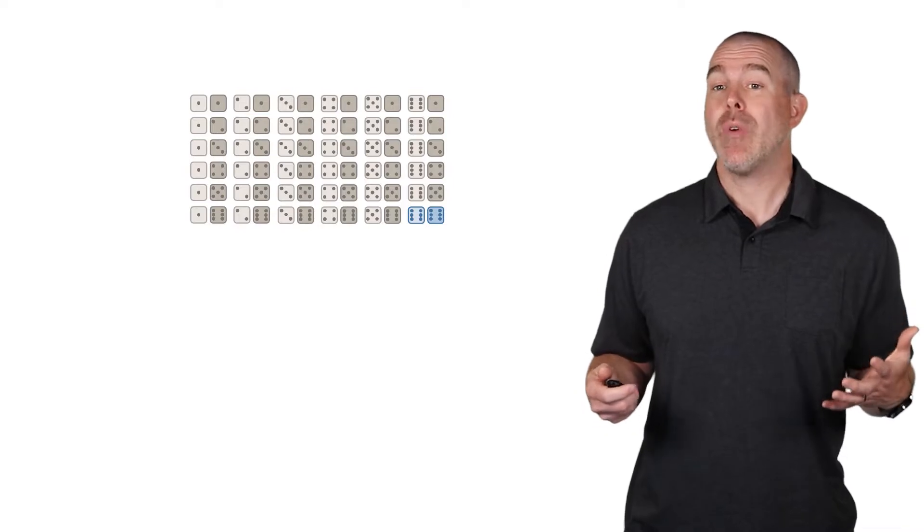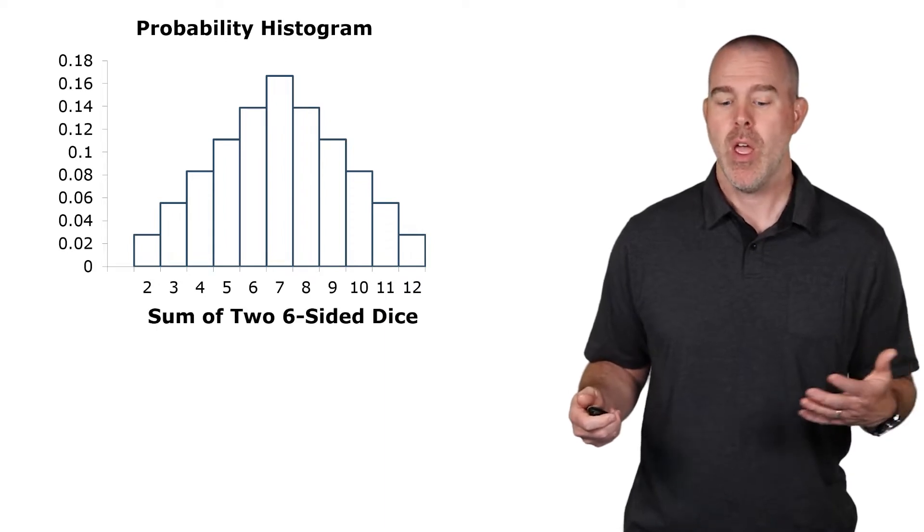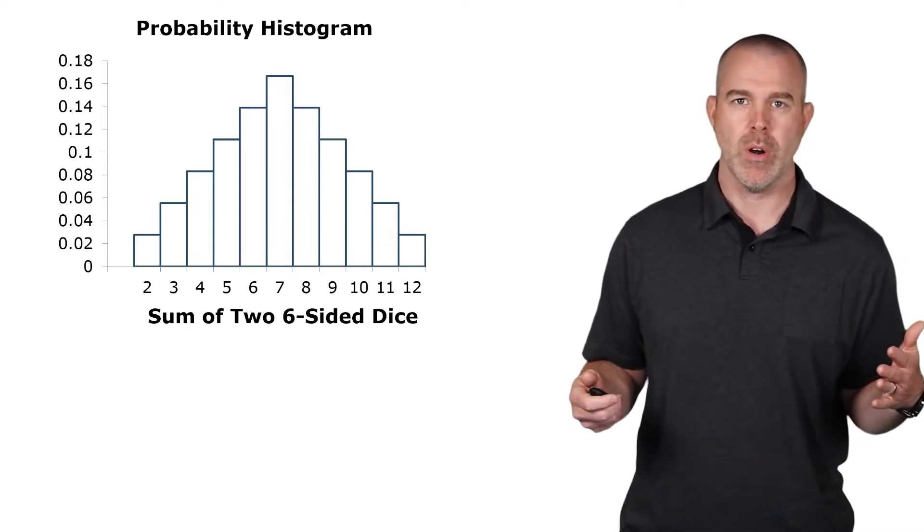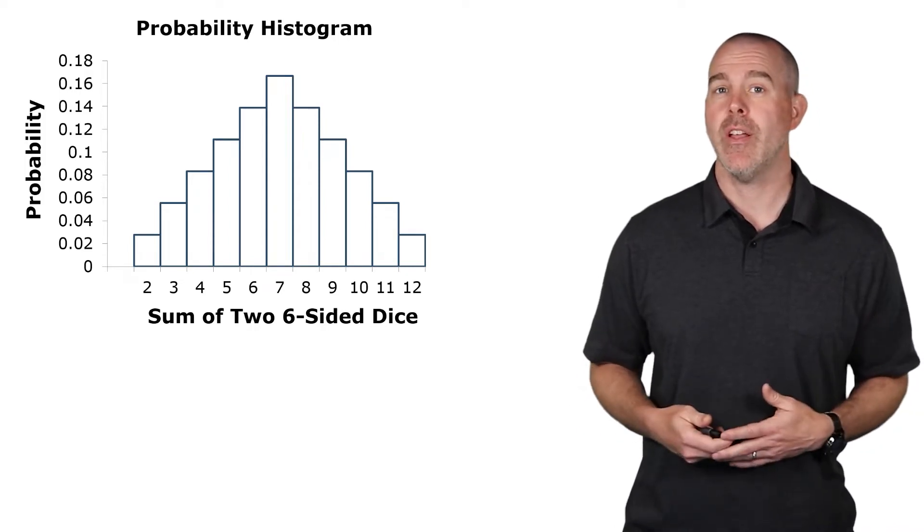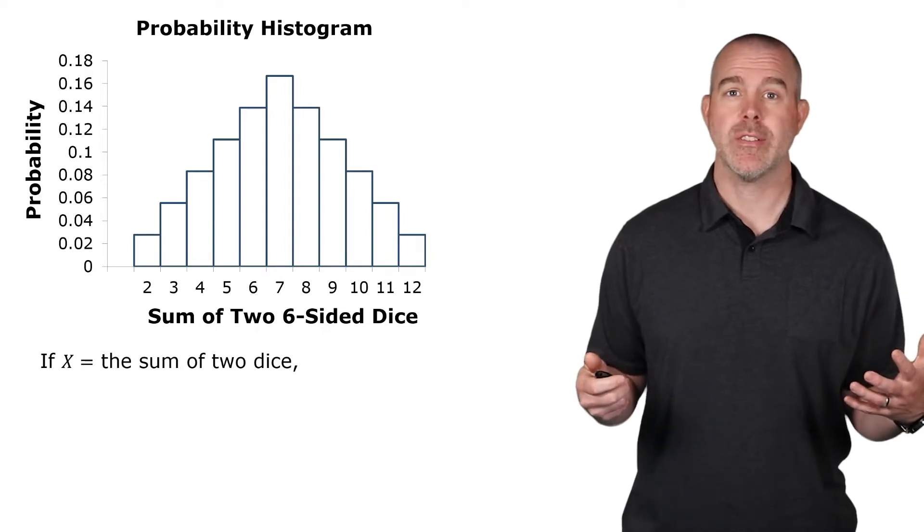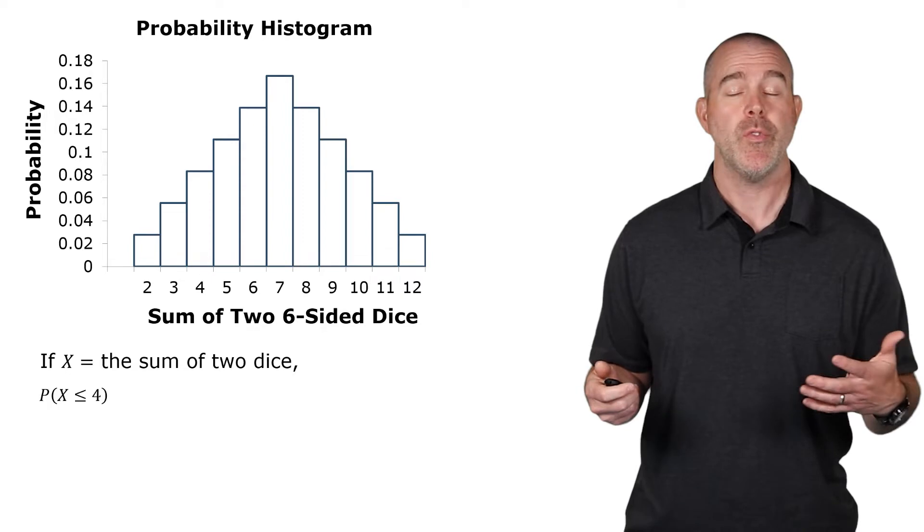If you make a graph of those probabilities, it looks something like this. It's actually called a probability histogram, where you have the sum of the two-sided dice on your horizontal axis, and then the probability is the vertical axis. So if we have a random variable, call it x is the sum of the two dice, we want to find the probability that x is less than or equal to 4.